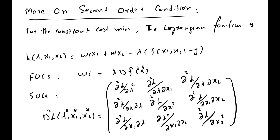Because the derivative of the production function with respect to a factor input gives you the marginal physical productivity. Now if we take the second order derivative of the Lagrangian function — which means taking the first order derivative of the first order conditions — we will get the second order conditions and can form a matrix. The diagonal entries are the own second derivatives with respect to lambda and x1.